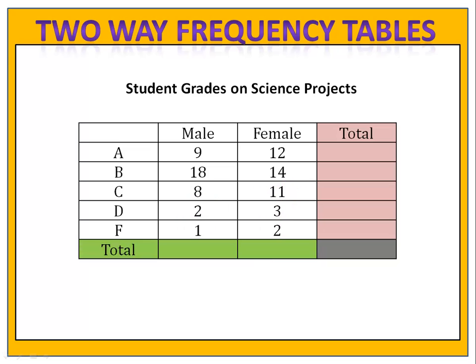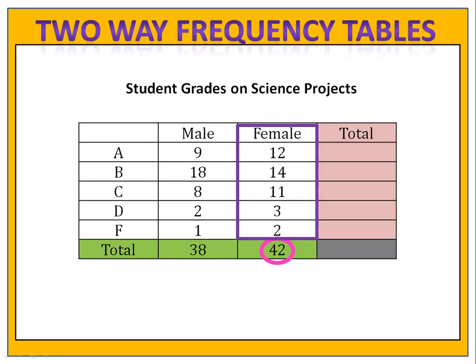We often add columns to total the amounts at the side and on the bottom of the table — we simply add up and down. The total number of males is thirty-eight and the total number of females is forty-two. We simply added all the numbers in each column.